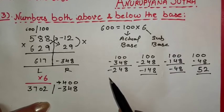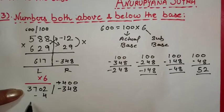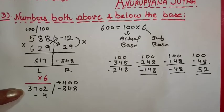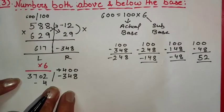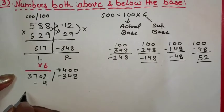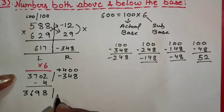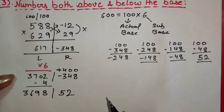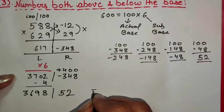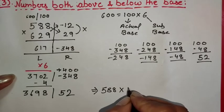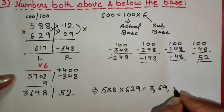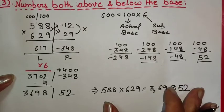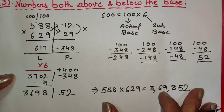What we have done is subtract 348 from 400 — that is, from four base numbers. So we need to subtract 4 from our left-hand side answer as well. After subtracting 4 from 3702 we get 3698 on the left-hand side and 52 on the right-hand side. Therefore the final answer of 588 × 629 is 369,852.